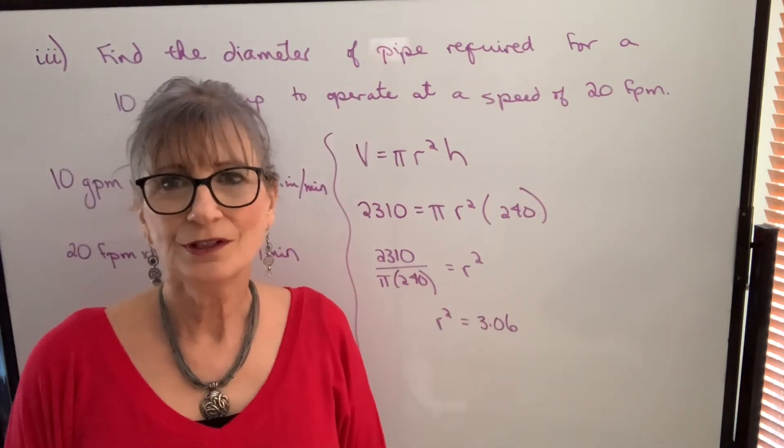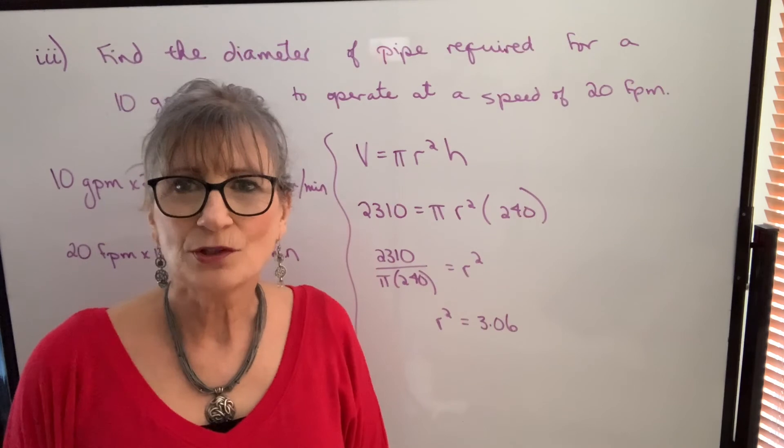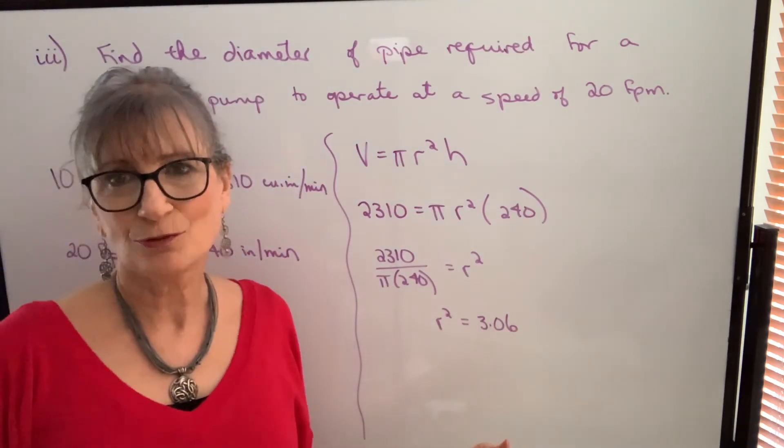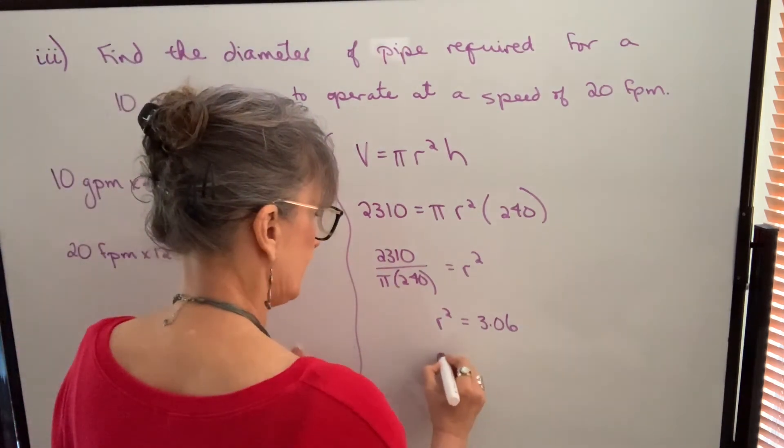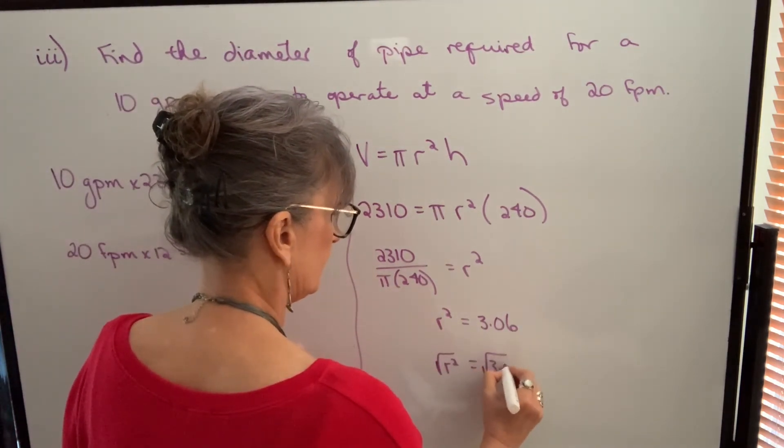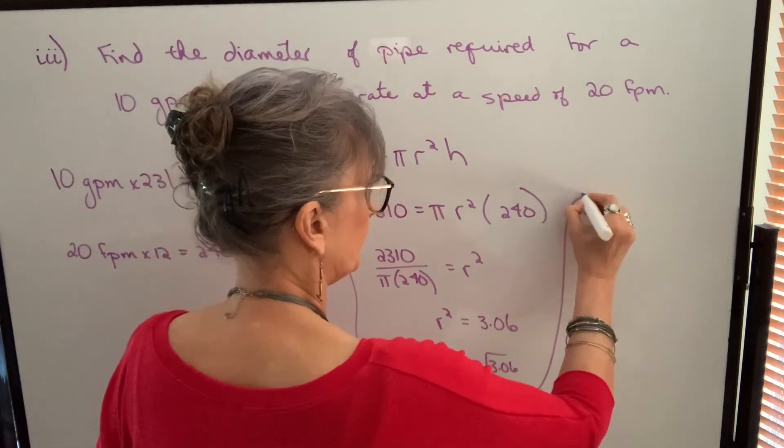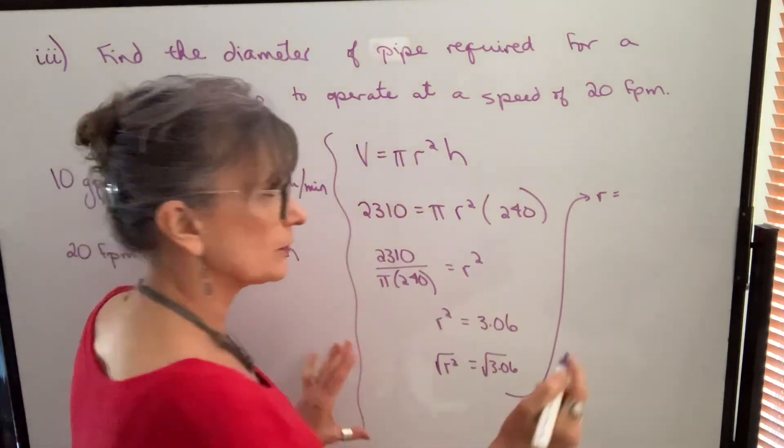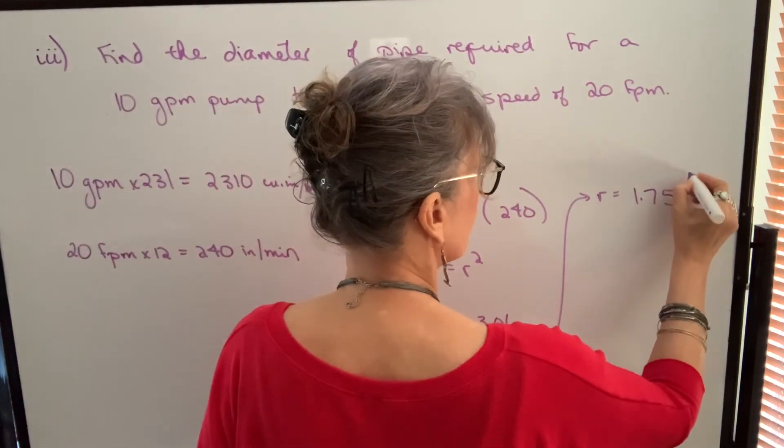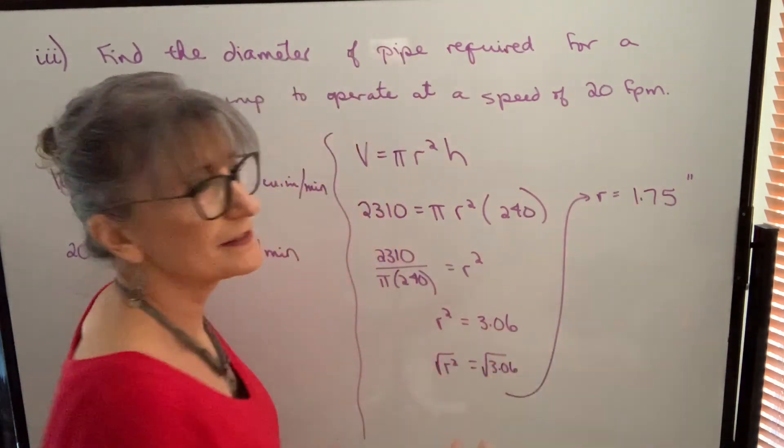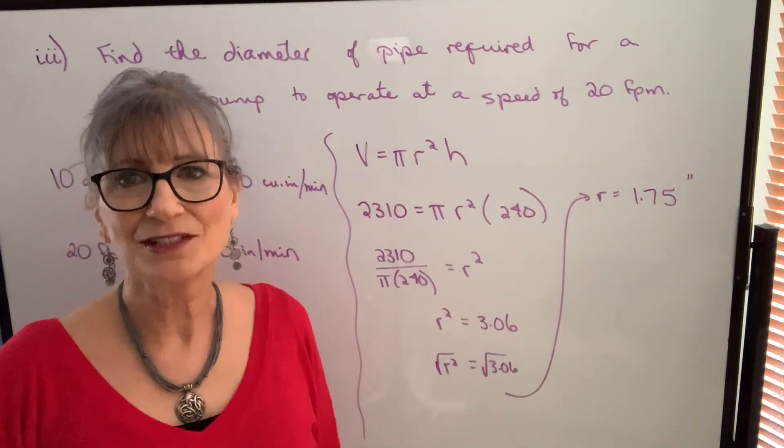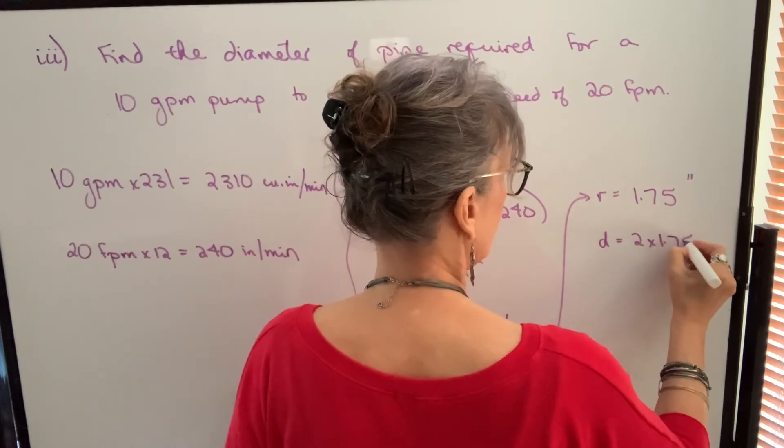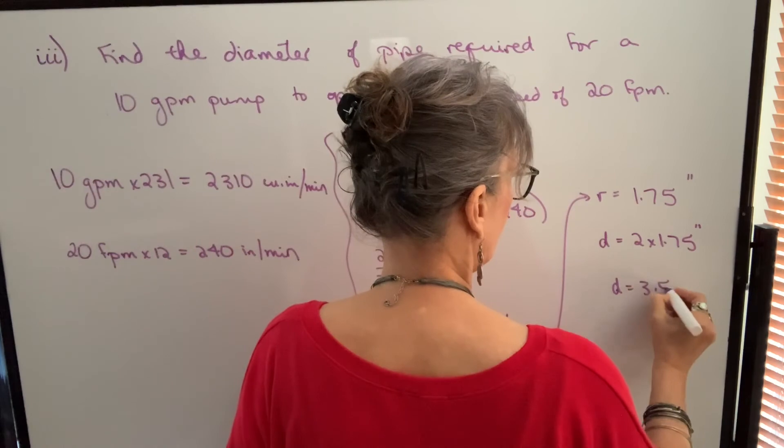Anytime you're solving for an unknown, you have to do the opposite operation. So if I want to know what r is equal to when I know r squared, I have to take the square root. So I take the square root of this side and I take the square root of this side. The square root of r squared is just r. The square root of 3.06 is 1.75. Once I have the radius, I simply double that to get the diameter. So the diameter will be 2 times 1.75. So the diameter will be 3.5 inches.